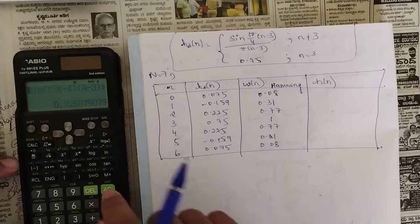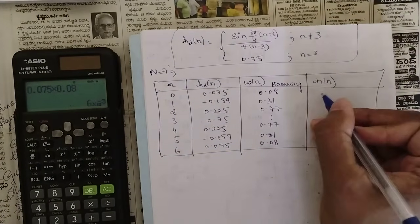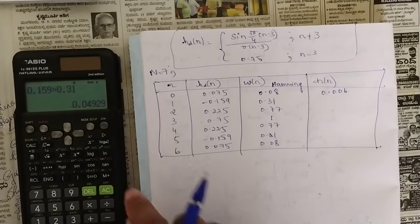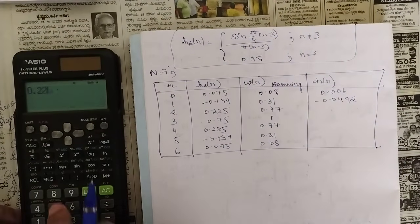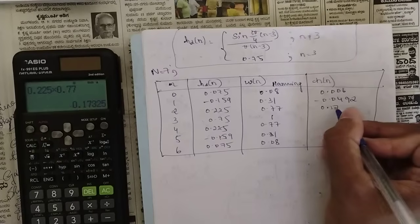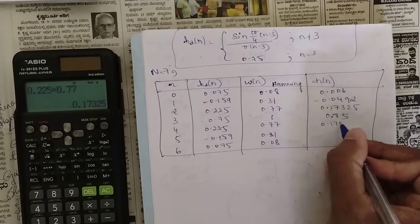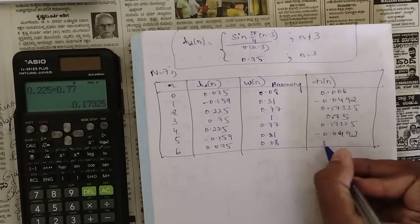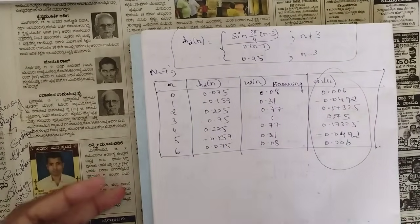Multiplying HD(n) × w(n) to get the filter coefficients H(n): H(0) = 0.075 × 0.08 = 0.006, H(1) = −0.159 × 0.31 = −0.0492, H(2) = 0.225 × 0.77 = 0.17325, H(3) = 0.75, H(4) = 0.17325, H(5) = −0.0492, H(6) = 0.006.